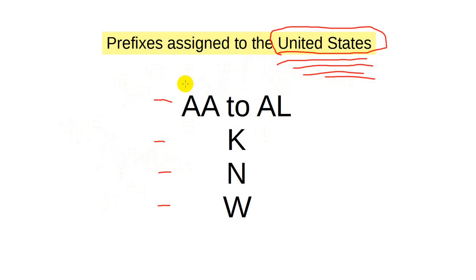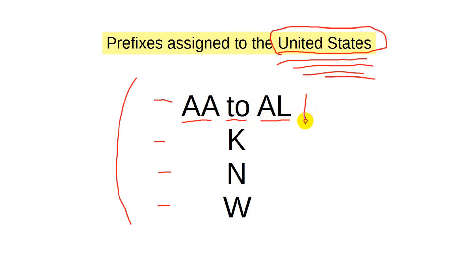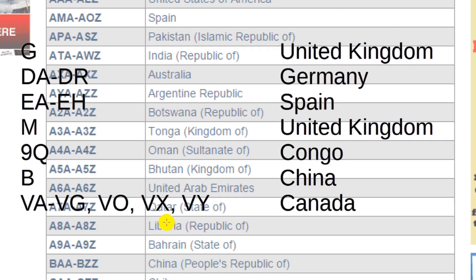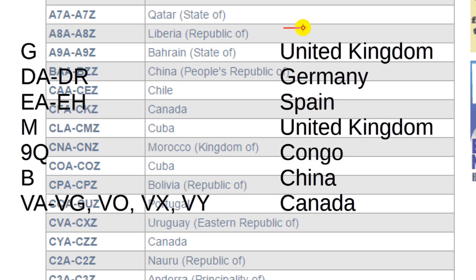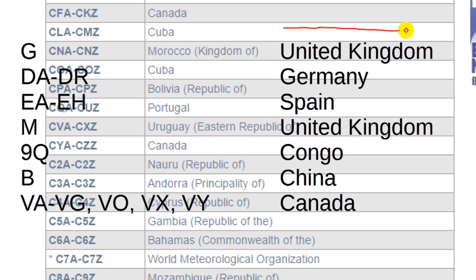But back to the amateur call signs. The prefix can be AA, AB, AC, or anything up to AL. Note that anything beyond AL is assigned to other countries. Any prefix beginning with the letters K, N, or W all indicate the United States. You can tell the country that assigns a call sign by its prefix.